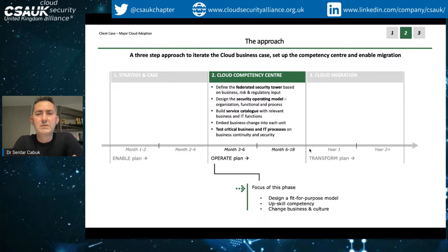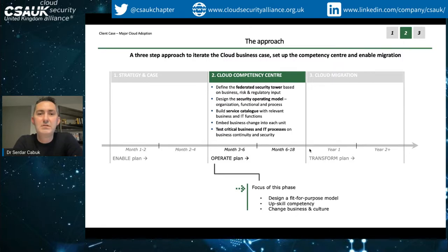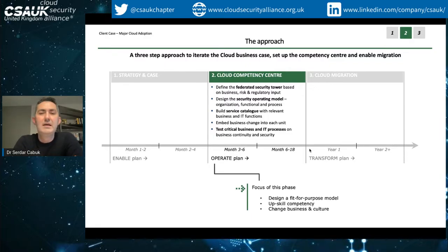The second pillar is the target operating model for the transformed organization. There are going to be functions that remain on-premise - for example, you could potentially outsource part of the vulnerability scanning function, but there's always going to be something about knowing your business applications better than the cloud service provider. Coming up with that separation of who is doing what - especially around incident management and patch management - is key for the cloud migration to succeed. It's on us to convince our colleagues in IT to be part of that security tower definition.